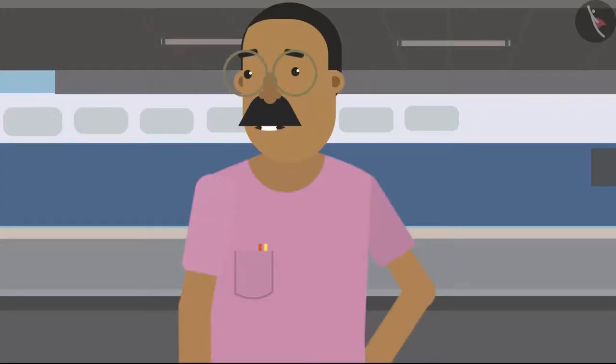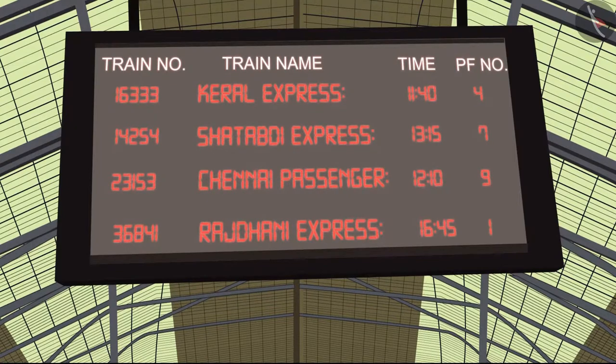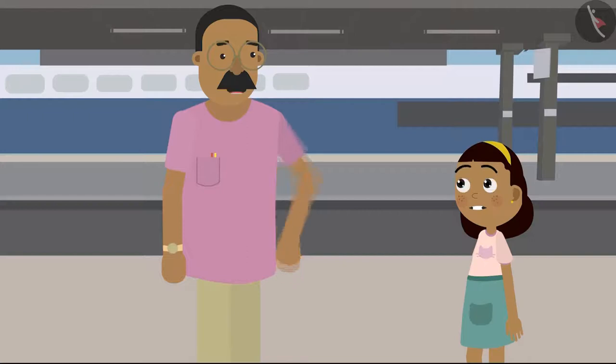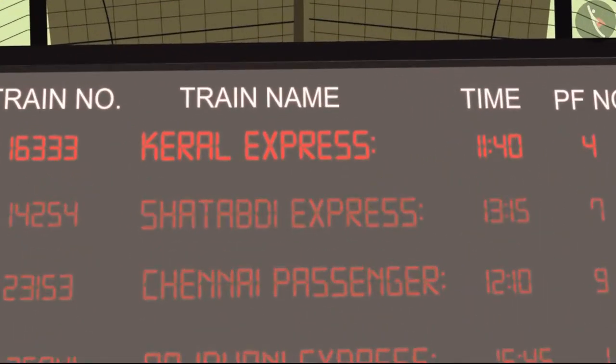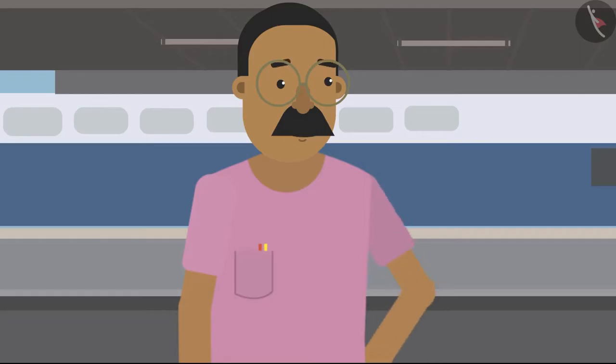Look at that board, Zia. It is written there which train will arrive on which platform and at what time. Zia, now can you tell on which platform our train will arrive? Oh wow, you must get a reward for this. Here is your chocolate.